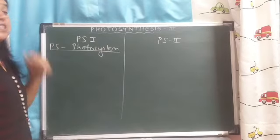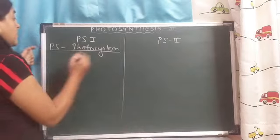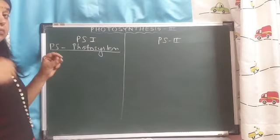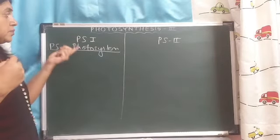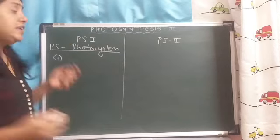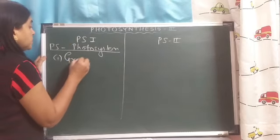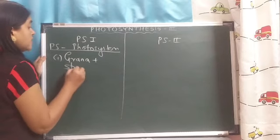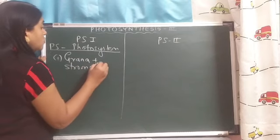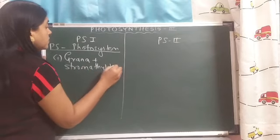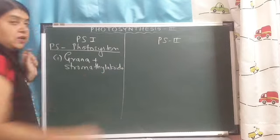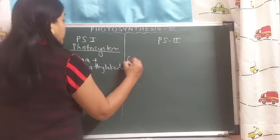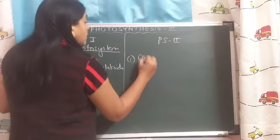PS1 is located in the grana as well as in the stroma thylakoids. PS2 is located only in the grana.